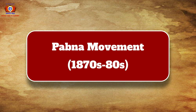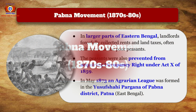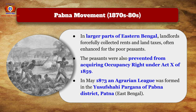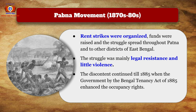The Pabna Movement took place in the 1870s to 1880s. In large parts of eastern Bengal, landlords forcefully collected rents and land taxes, often enhanced for poor peasants, who were also prevented from acquiring occupancy rights under the Act of 1859. In May 1873, an Agrarian League was formed in Yusufshahi Pargana of Pabna district of eastern Bengal. Rent strikes were organized, funds were raised, and the struggle spread throughout Pabna and other districts of eastern Bengal.